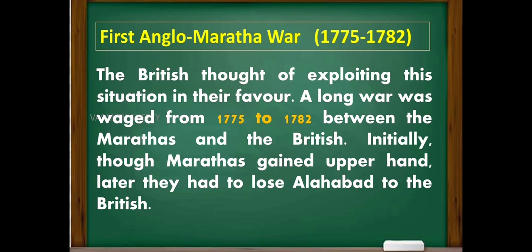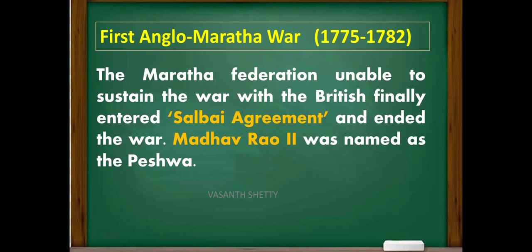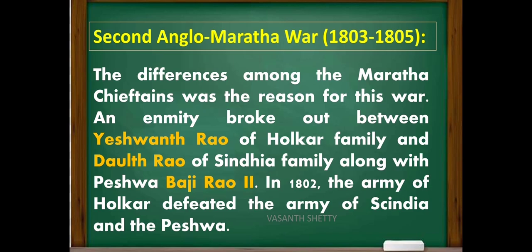The British thought of exploiting this situation in their favor. A long war was waged from 1775 to 1782 between the Marathas and the British. Initially the Marathas gained the upper hand, but later they had to lose Allahabad to the British. The Maratha federation, unable to sustain the war, finally entered the Salba Agreement and ended the war. Madhavrao II was named as the Peshwa.